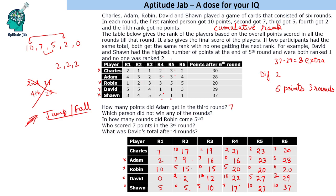Which person did not win any of the rounds? Winning a round means scoring 10 points in that round. Adam did not score 10 in any round. Charles, Robin, David, and Sean all scored 10 points in at least one round. So Adam is the person who did not win any round.